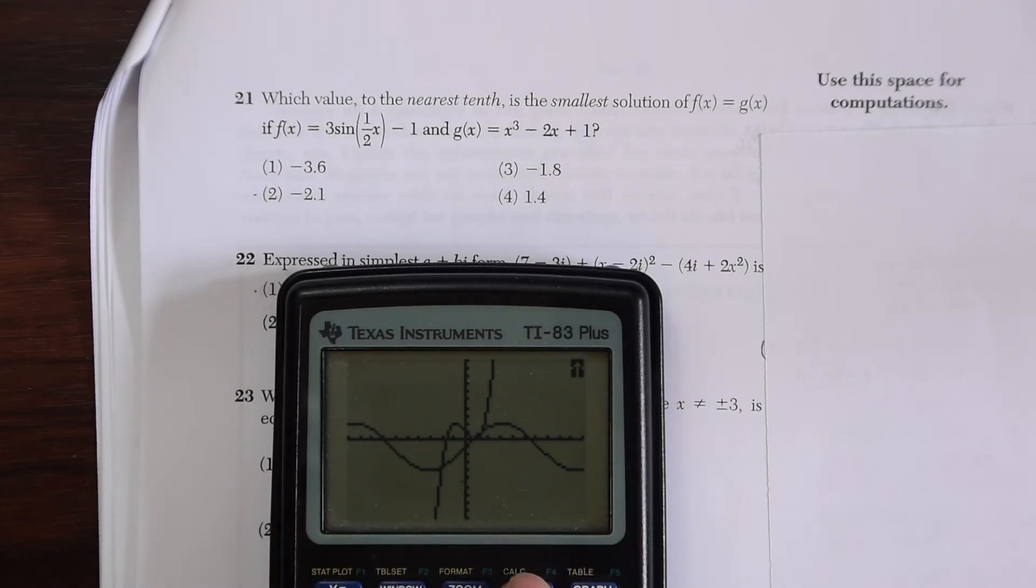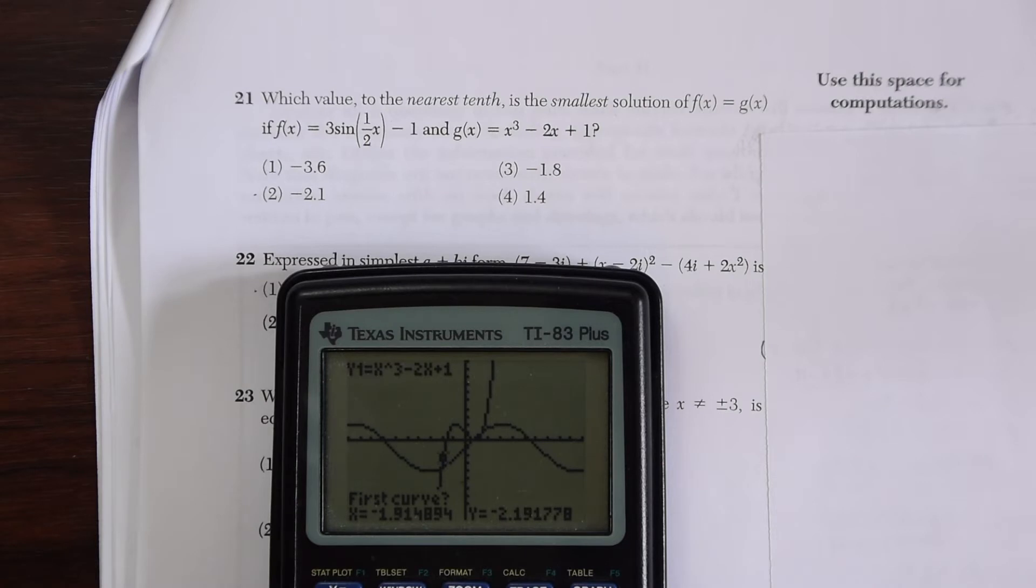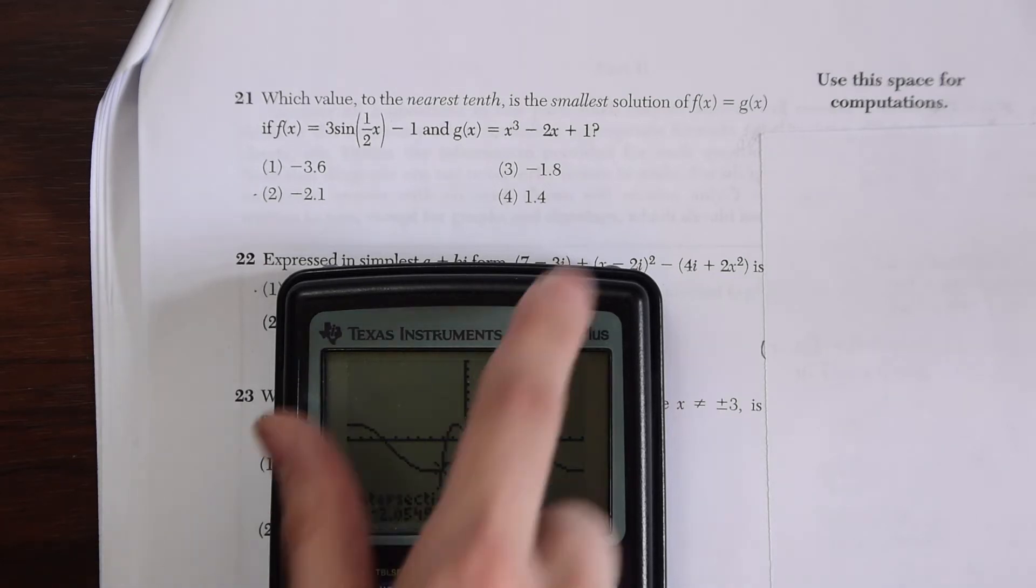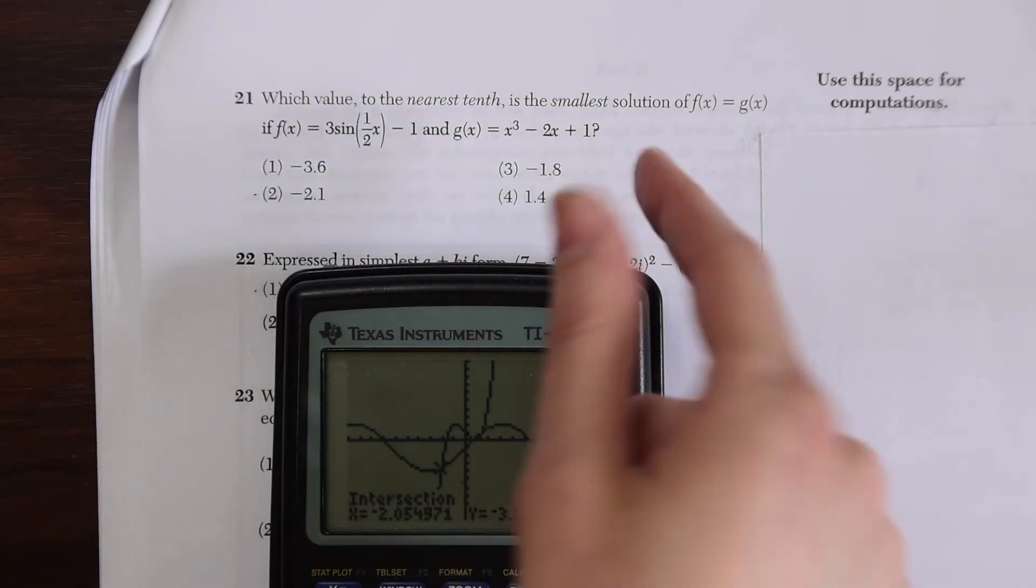To get that, we're going to go second, calc, and then go to intersect. First curve, enter. Second curve, enter. Let's see what we get. And we get negative 2.05.